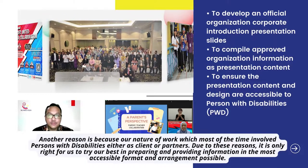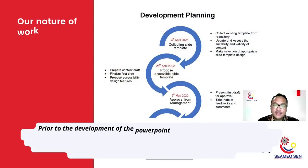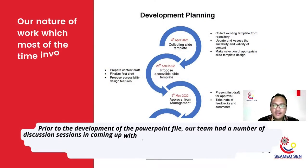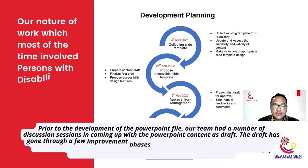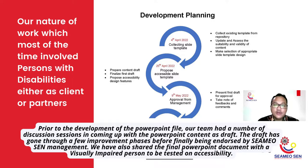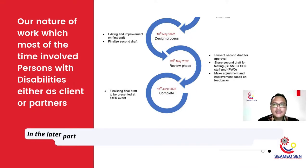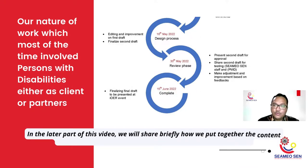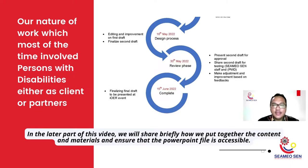Prior to developing the PowerPoint file, our team had a number of discussion sessions in coming up with the content as a draft. The draft went through a few improvement phases before finally being endorsed by SIMIOCENT management. We also shared the final PowerPoint document with a visually impaired person to be tested on accessibility. In the later part of this video, we will share briefly how we put together the content and materials and ensured the PowerPoint file is accessible.